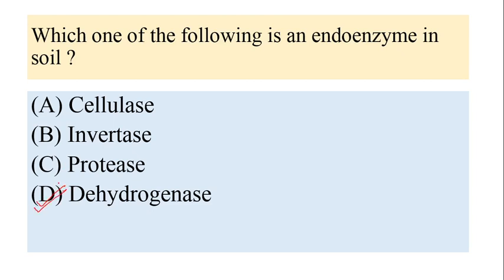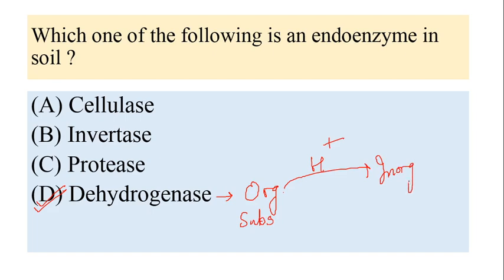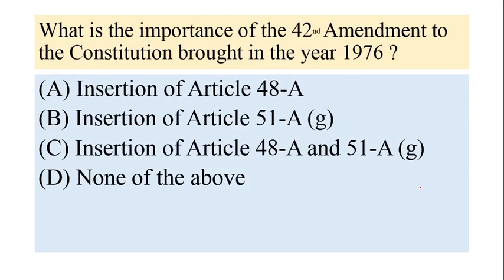Dehydrogenase plays a vital role in the biological oxidation of soil organic matter. Its main function is to transfer hydrogen from an organic substrate to an inorganic substrate, which is why it exhibits oxidoreductase activity in the soil.